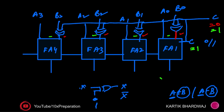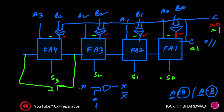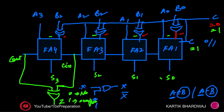The outputs of the four full adders are S3, S2, S1, and S0, which give the addition or subtraction result. To check for overflow, we take the Cout of the last full adder (FA4) and the Cin into FA4 and XOR them. The output Z is 0 for no overflow and 1 if overflow is present. This completes the design of the adder/subtractor circuit with overflow detection.